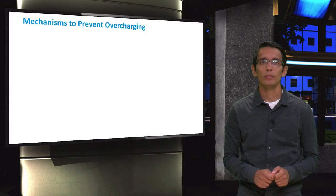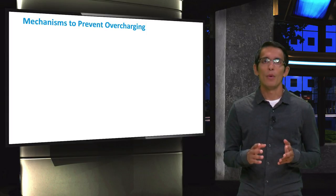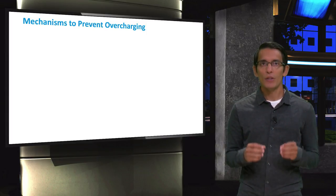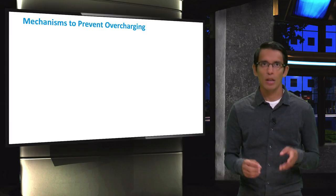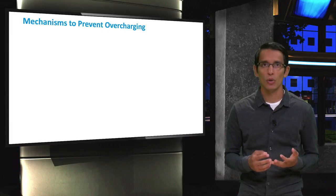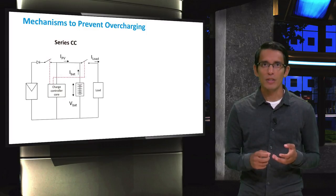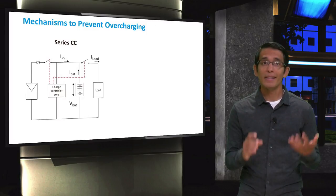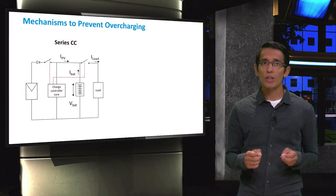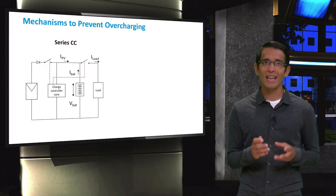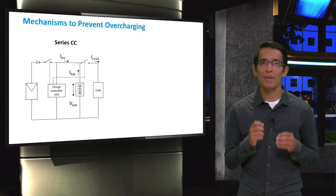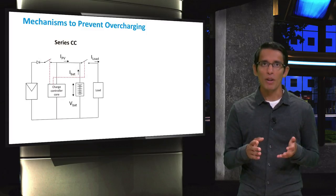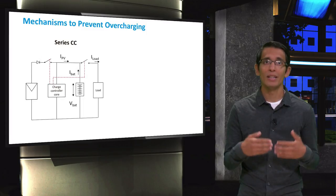Now that you know that a charge controller is meant to protect a battery in various ways, let's take a look at a few ways that this can be accomplished. You just saw that one of the main functions of the charge controller is to prevent overcharging of the batteries. There are two ways this can be achieved inside the charge controller. The first method is called the series charge controller. In a series charge controller, overcharging is prevented by disconnecting the PV array until a particular voltage drop is detected, at which point the array is connected to the battery again and charging can continue.